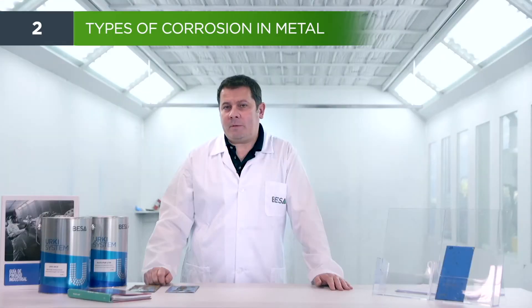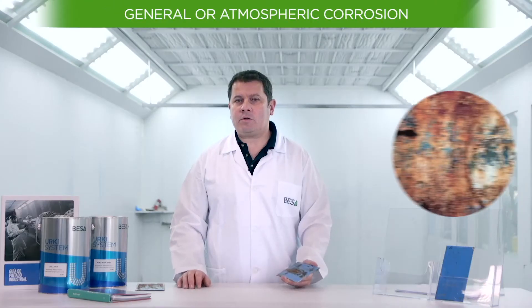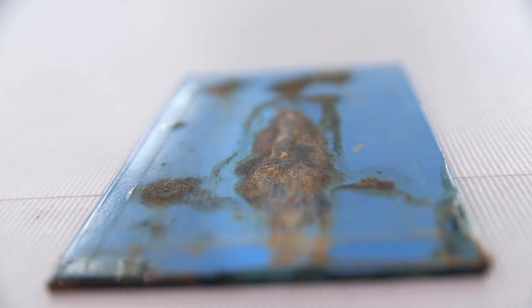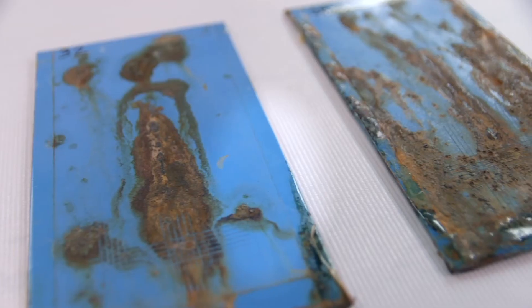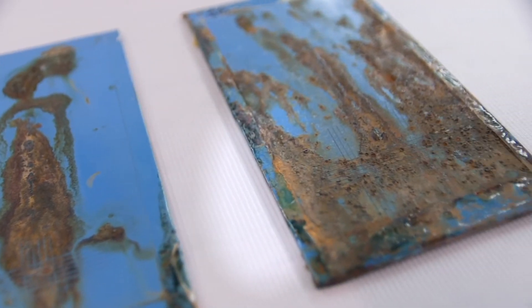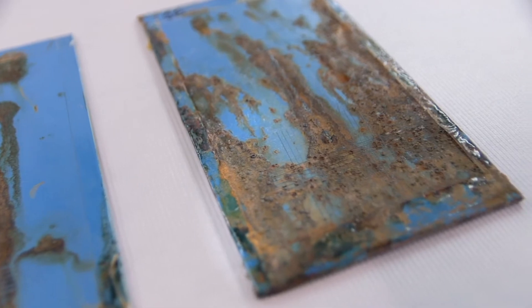There are basically four types of corrosion, but there are also others that occur to a lesser extent. The first would be general corrosion, where corrosion develops evenly over the entire surface of the material. Depending on the exposure time, less or more corrosion is produced.